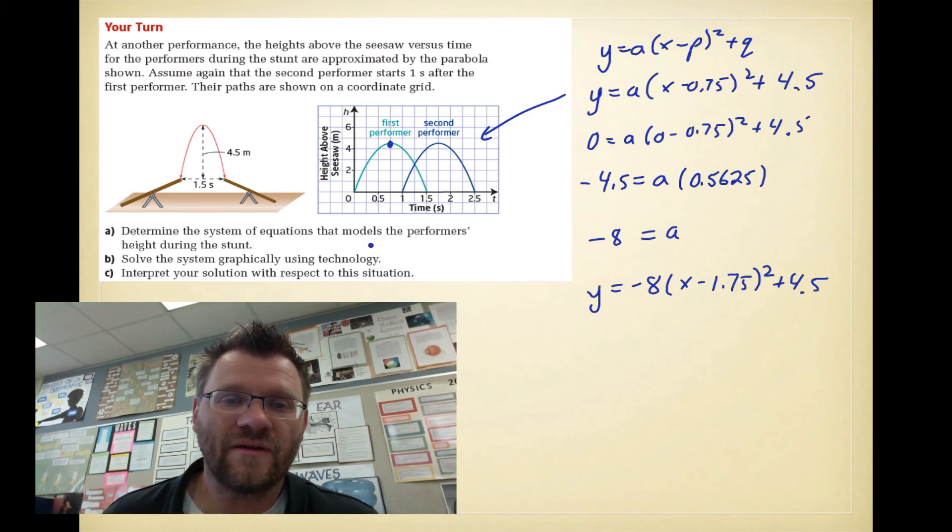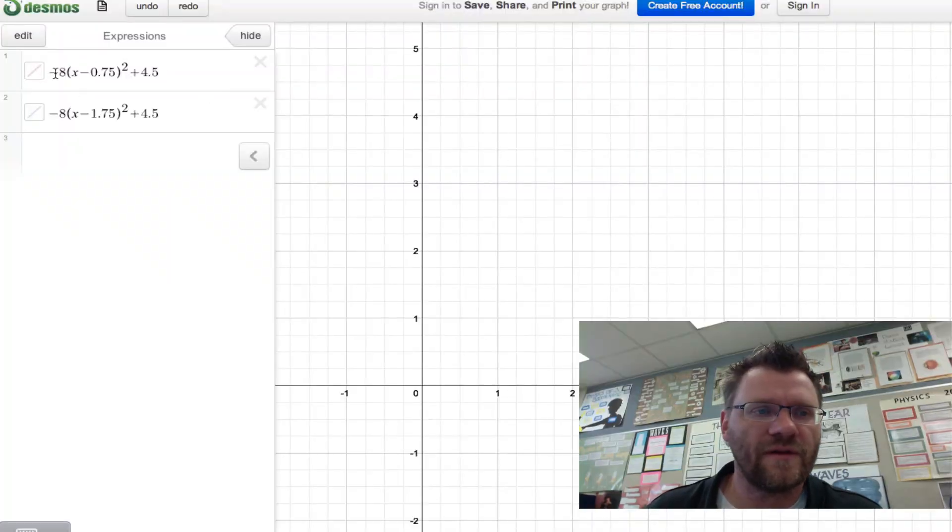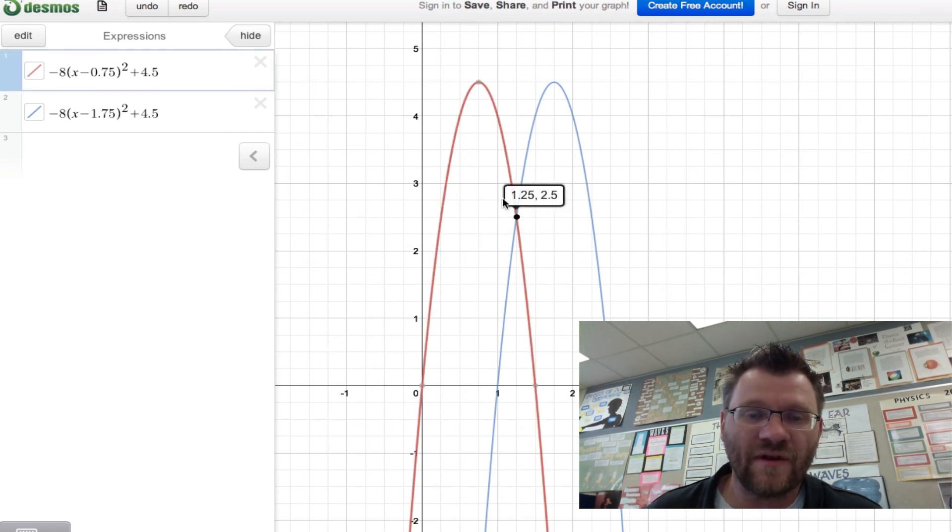You have to remember how to find the equations for parabolas. We need to solve the system graphically using technology. So we're going to move over to desmos.com to do that. I've plugged in both equations. We've got negative 8 times (x minus 0.75) squared plus 4.5, and we have negative 8 times (x minus 1.75) squared plus 4.5. This is the parabola of the first one, and the blue one is the parabola of the second acrobat. What happens is that we get a final answer of an intersection point of 1.25 comma 2.5. So to interpret that, 1.25, remember that our x-axis was our time. So that just means that it takes 1.25 seconds before these two acrobats actually meet in the air.